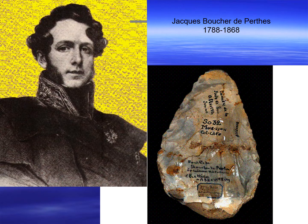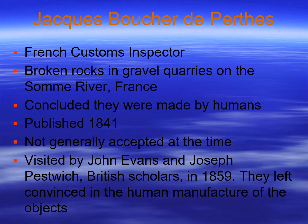In France, Boucher de Perthes was also looking at stone tools found on river terraces. He was a French customs inspector who found broken rocks in the gravel quarries of the Somme River and concluded they were made by humans. He published in 1841, though his work wasn't generally accepted at first. He was visited by British scholars John Evans and Joseph Prestwich in 1859, who were finally convinced the stones were human-made. Earlier theories had suggested they were thunder stones, created when lightning hit the ground, or made by fairies or trolls.